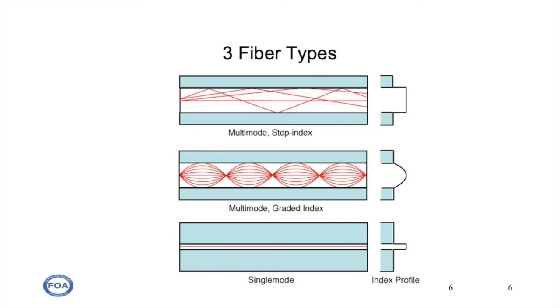In graded index fiber, there is a change in the index of refraction across the core, which guides the rays or modes of light differently.